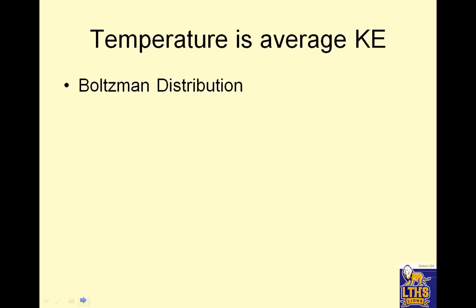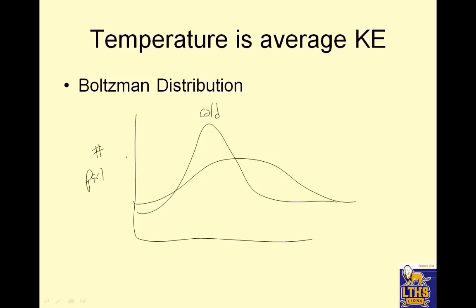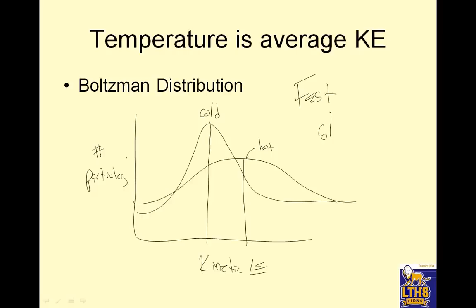Temperature is average kinetic energy. Let me show you the Boltzmann distribution. This is the number of particles, and this is kinetic energy, which is the energy of motion. This is the cold peak; this is the hot peak. More particles have an average kinetic energy at the lower number. It's the average — just where the peak of that hill is. Notice there are some particles that are really hot and some really cold. Fast is hot and slow is cold.